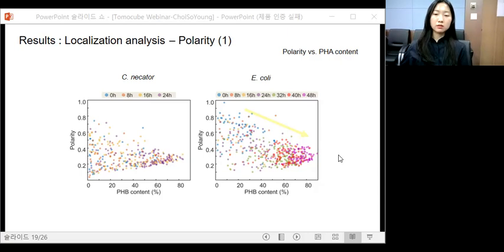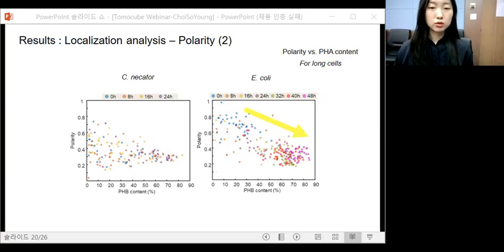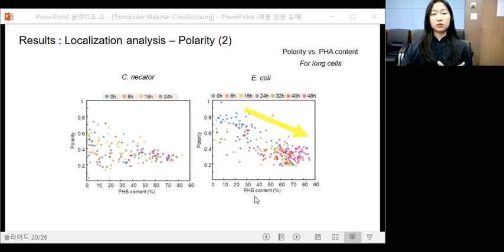Interestingly, the polarity for E. coli cells seems to be negatively correlated with the PHA contents, while the C. necator does not show any noticeable correlations. The correlation is more clear in these new scatter plots. These were made to contain only the cells which are longer than the average length of dividing cells. Because the polarity indicates the distance of PHA granule to the cell pole concerning the cell length, so we assumed that the longer cell shows the polarity differences more clearly. In the case of E. coli, the negative correlation is more clearly observed, while the plot for C. necator cell still does not show any correlations. The decreasing polarity trends indicate that the PHA granule tend to be localized to the cell poles, even though they can be formed anywhere in cell cytoplasm.